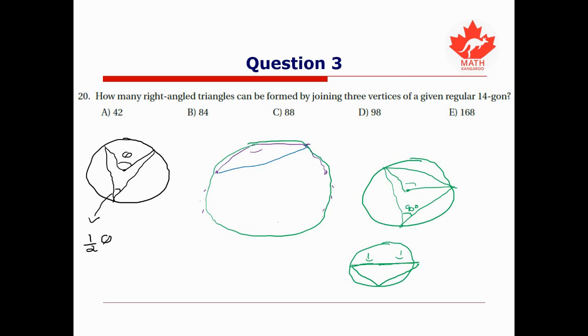Well, it's tempting to say 14, one for each point. But remember, if I have a diameter line, it's intersecting two points at the same time on opposite ends. So there's really only half of those. So there's seven possible choices for the diameter line.